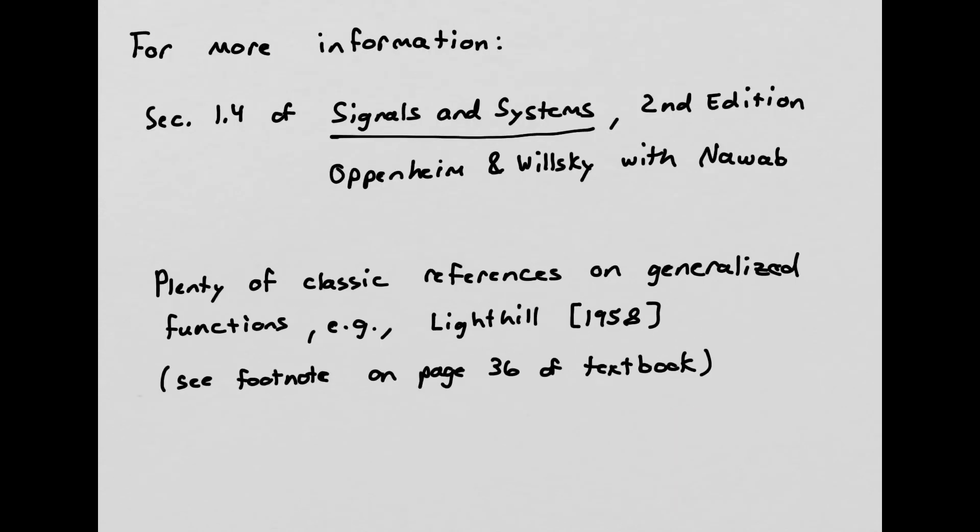So this has been a brief introduction to the continuous time impulse signal. For more information, you can refer to section 1.4 of Signals and Systems 2nd Edition by Oppenheim and Wilski with Nawab. And there are plenty of classic references on generalized functions in the mathematics literature. For instance, you can see the textbook by Lighthill from 1958, and that's referenced in a footnote on page 36 of the textbook. So there's plenty of other information out there. This video simply summarizes a few key points about the continuous time impulse. Thanks for watching.